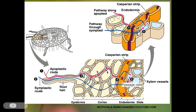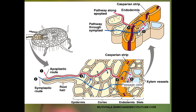By these two routes, absorbed water reaches the xylem cells. In the apoplastic route, absorbed water enters the apoplast zone of the rootlet and passes to the cortical cells. The water received from the rootlets again enters the apoplast of the cortical cells, and finally the water reaches the passage cells of the endodermis.